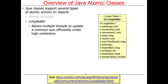Something else they provide is called a LongAdder, which allows multiple threads to update a common sum efficiently under high contention. This would be used for things like a web page hit counter in a web server, where you're going to have lots of threads updating this variable. You want to make it eventually consistent, but you want to do it really efficiently in order to minimize the time spent in the critical section.